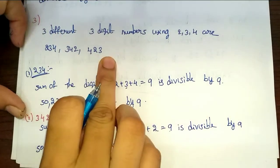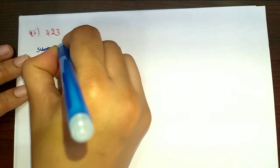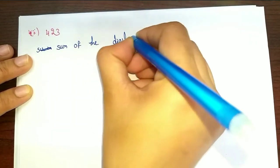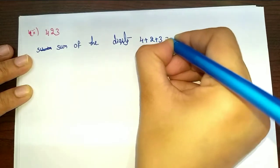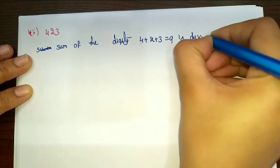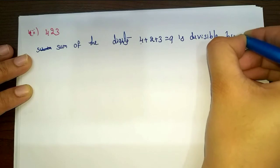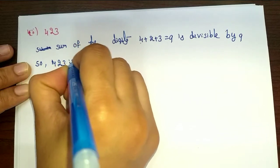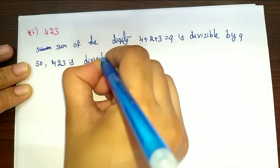Next, last one: 423. Sum of the digits: 4 plus 2 plus 3 equals 9. 9 is divisible by 9. So 423 is divisible by 9. That's it.